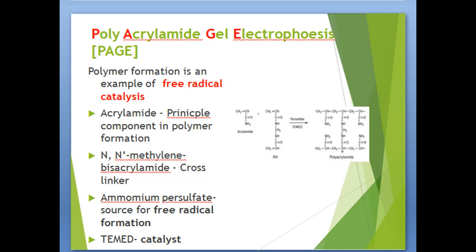Acrylamide gel is used as a supporting media in electrophoresis and is often referred to as PAGE. Acrylamide is the principal component in polymer formation. Methylene bisacrylamide serves as a cross-linker. Ammonium persulfate serves as a source for free radicals, and TEMED acts as a catalyst.